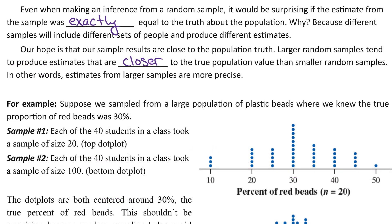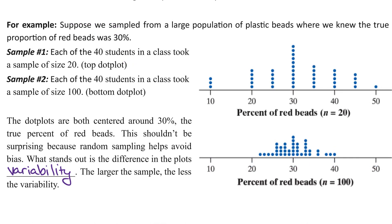But even when making inference from a random sample, it would be surprising if our estimate was exactly equal to the truth of the population. This is because different samples will yield different results. Our hope is that our sample is close to the population truth — that's why we're taking it. So we're going to talk about sampling variability today, and what we're going to see is that if you take a larger sample, your estimates will be closer to the truth.